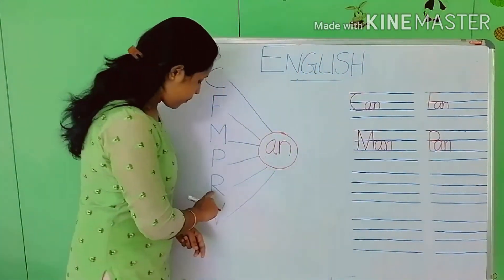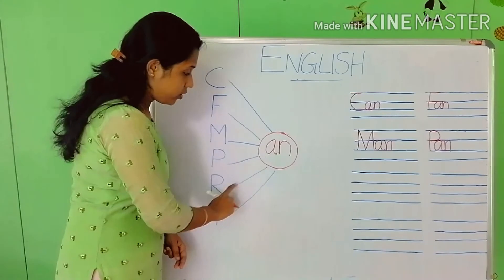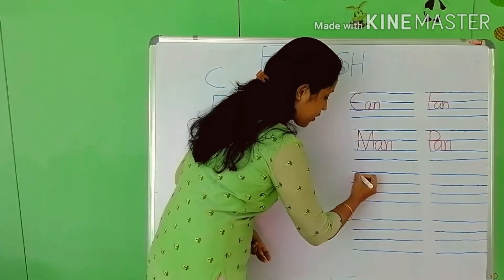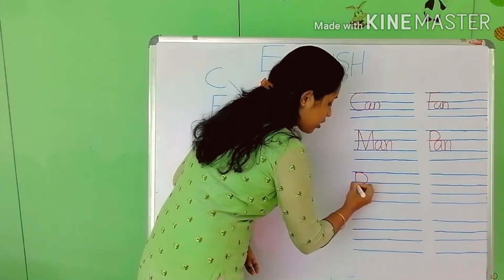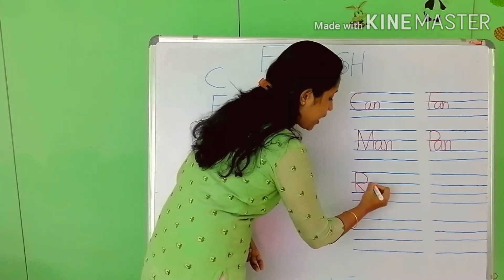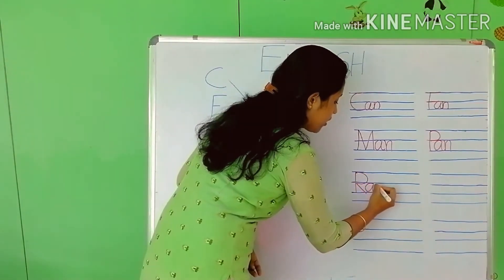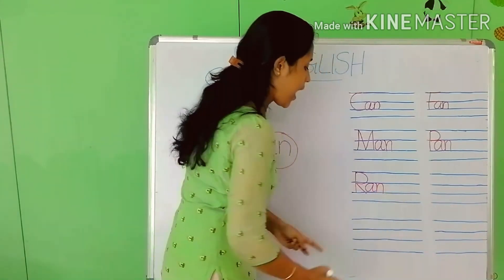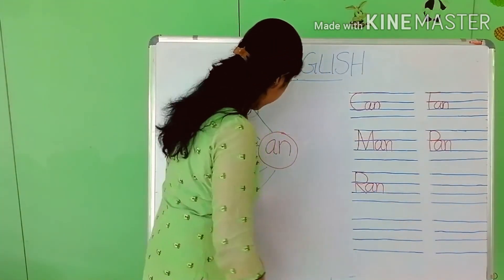Next is 'ran' — R, AN — 'ran'. R, then A and N. R-A-N — 'ran'.